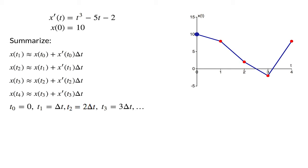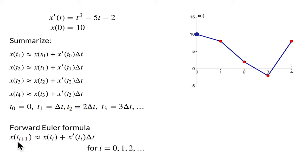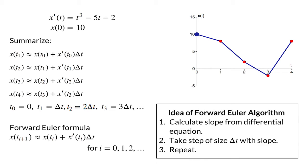We can continue this process beyond the fourth time point. We can write the forward Euler formula for an arbitrary time point t_i: the value x of t_{i+1} at the next time point is approximated as the value x of t_i of the previous time point plus the value of the derivative times delta t. More important than memorizing this formula is understanding the idea behind the forward Euler algorithm. In each step, we simply calculate the slope of the function as the derivative given by the differential equation, then take a step of size delta t with that slope.